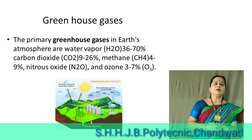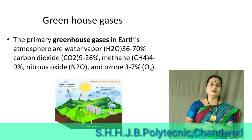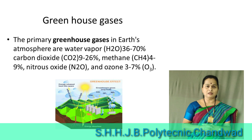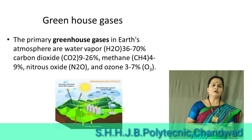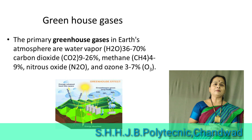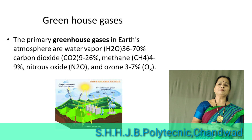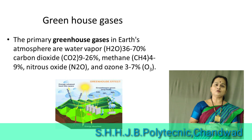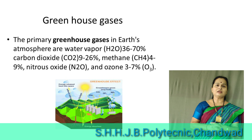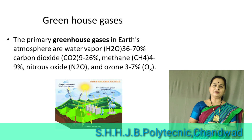Now let us see which are the greenhouse gases. Greenhouse gases are of five types: water vapor, carbon dioxide, methane, nitrous oxide, and ozone. Their percentages are given in the slide.